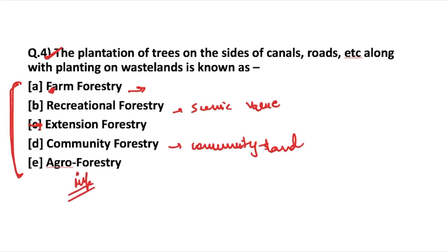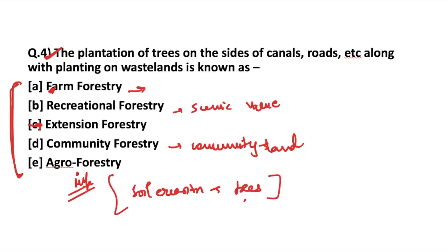Agroforestry is very important. It is defined as sustainable land management where trees and shrubs are combined with crops and livestock. For example, trees may be grown on a farm to prevent soil erosion — this is a form of agroforestry where trees protect the soil against erosion. This is how we classify social forestry into its different forms.